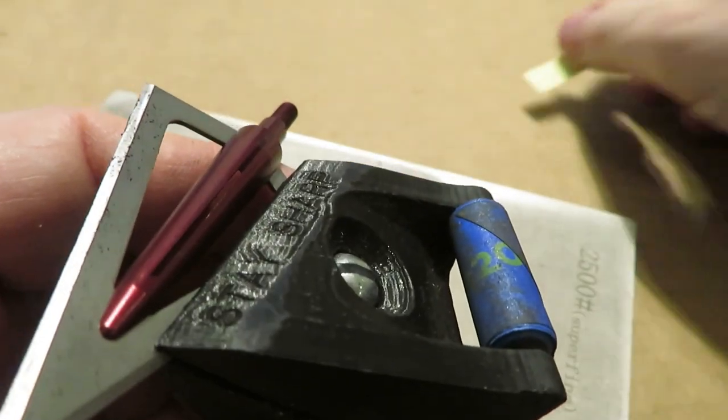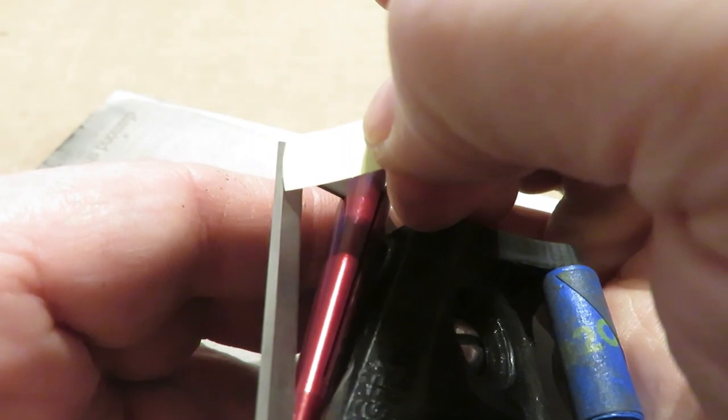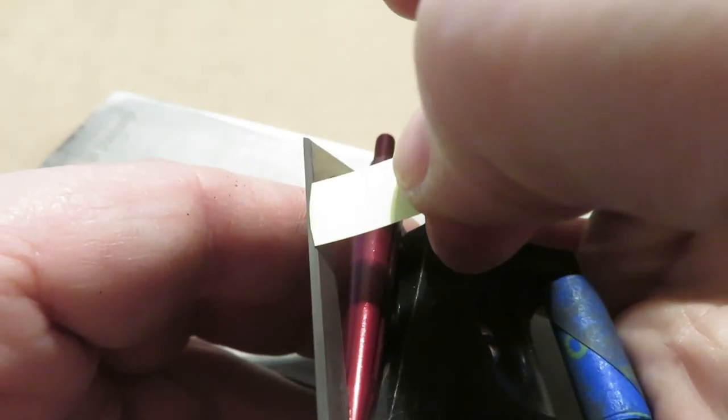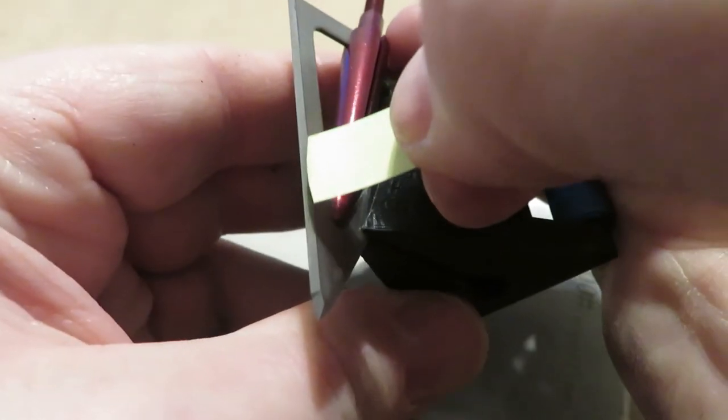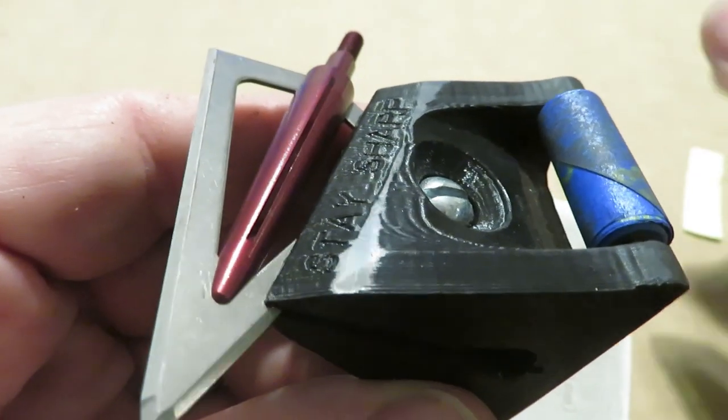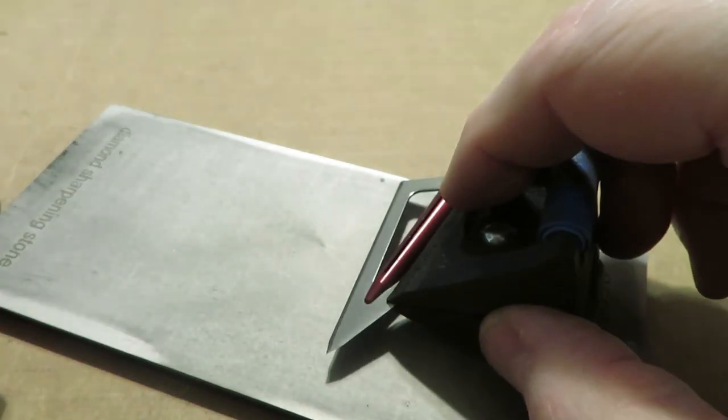All right, it's time to check our burr status. Blow off that debris and see if we have reached the burr. Yes, we've achieved the burr. The paper flexes over the entire length. That is the key. Now at 2500 grit we're going to break that burr off or push it over the other side.